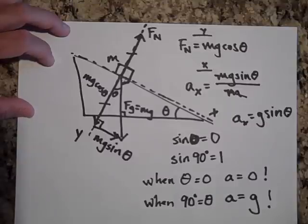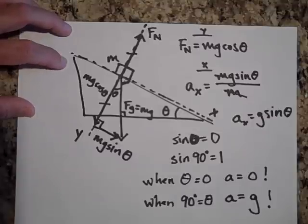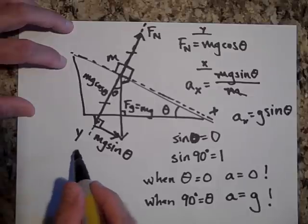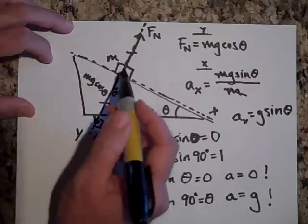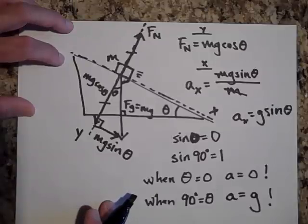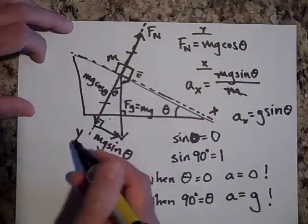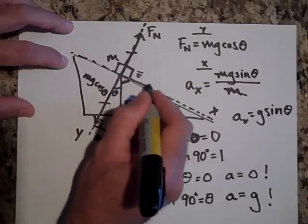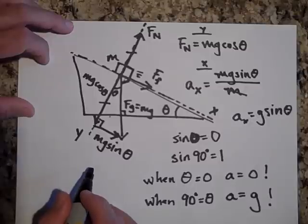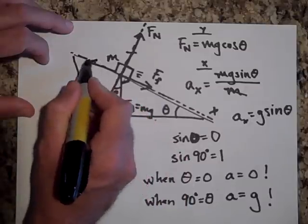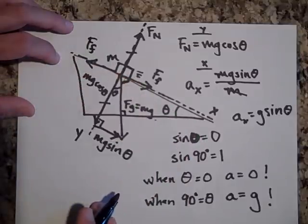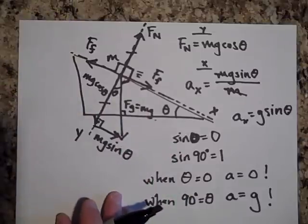That's the physics of a basic inclined plane problem. One more note: if the object is moving up the incline and there's friction, friction acts downward along the incline. If the object is sliding down and there's friction, friction acts upward along the incline, slowing it down. You have to be careful — friction is not always in the same direction; it depends on which way the object is moving.